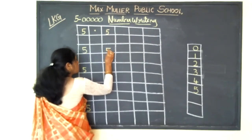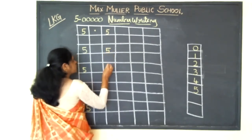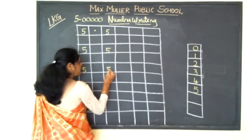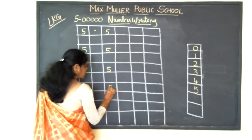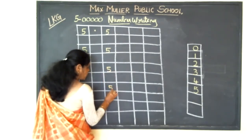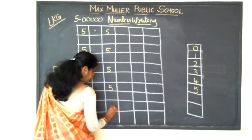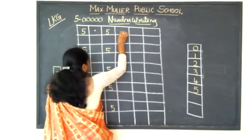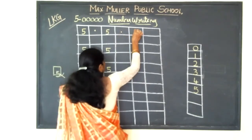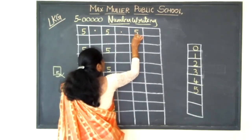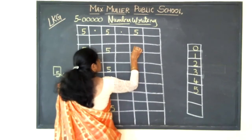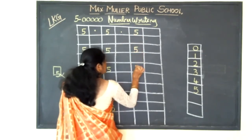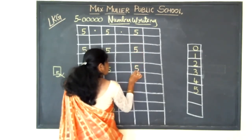Say and write. Five. Say and write, children. Five. Five. Five. Keep a dot. Five. Five. Five.